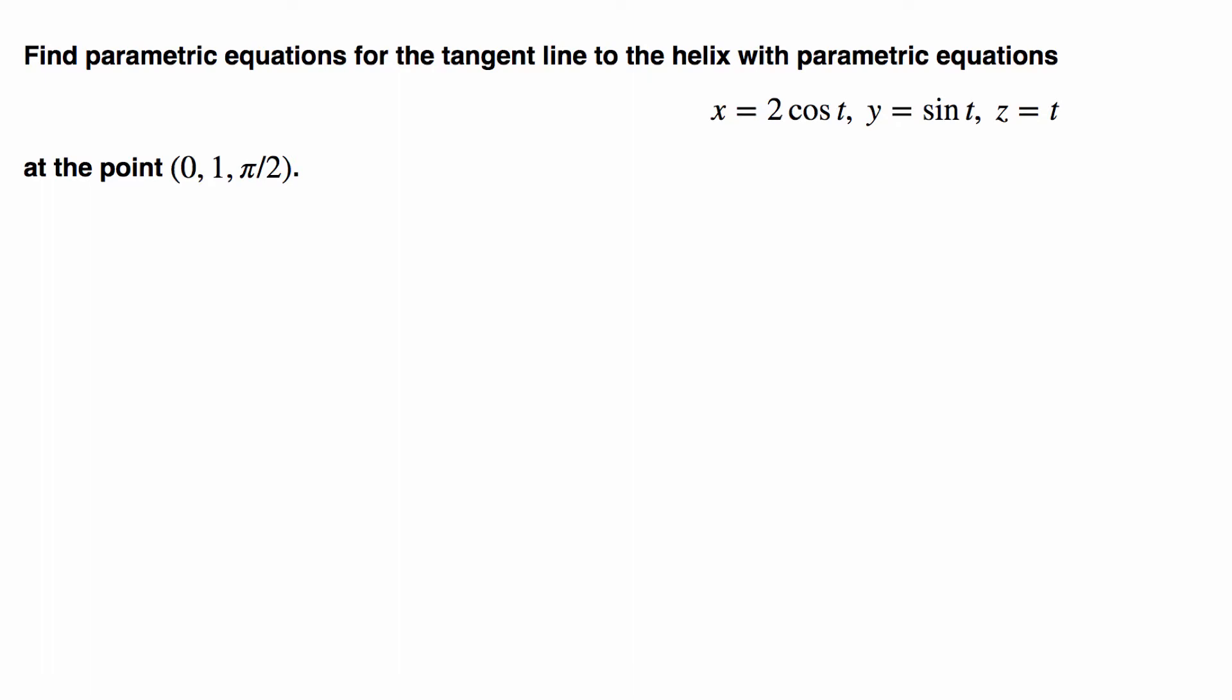Let's write the vector equation for the curve. The vector equation for the curve is just ⟨2 cos t, sin t, t⟩. That's r(t), we can say this is just r(t) equals this.